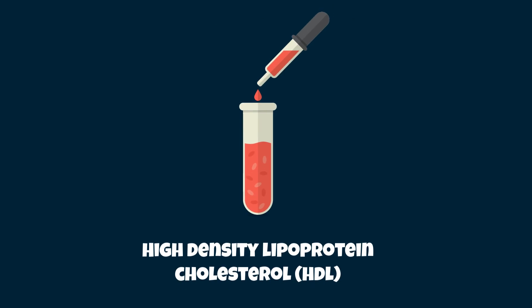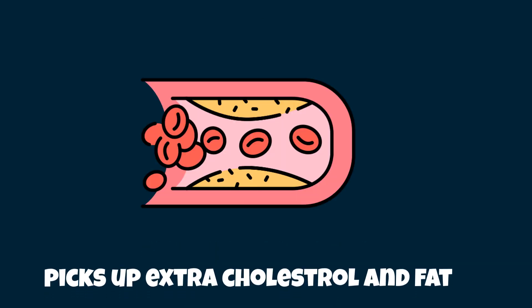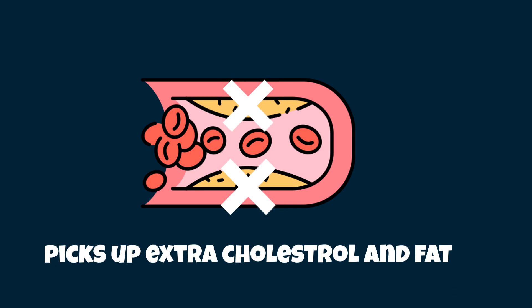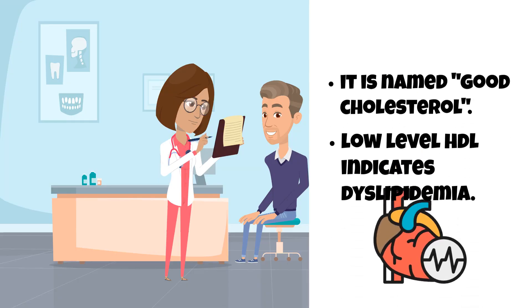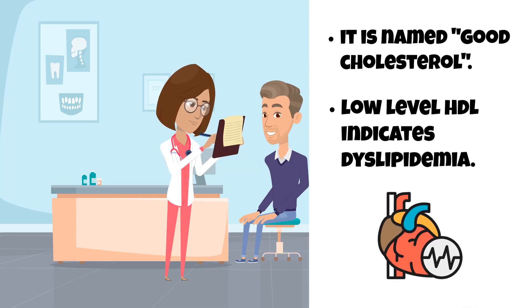Another blood level collected to assess dyslipidemia is HDL. HDL cholesterol is made up of very little lipid and a high amount of protein. It is beneficial in the body because it functions by going to the tissues and picking up extra cholesterol and fat. Due to the positive effects of HDL, it is named good cholesterol since it helps prevent plaque formation. Because of these positive functions, a low HDL level indicates dyslipidemia and is a risk factor for complications.